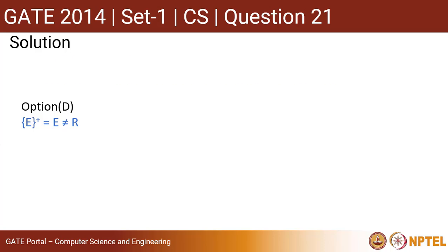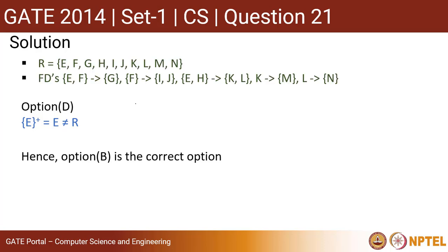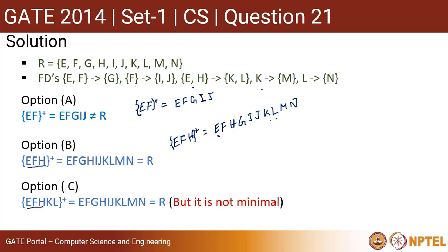Now if we consider the fourth option, we are checking for E. E by default covers E but nothing else. So it does not determine all the attributes of R. Definitely this is not the answer or key.